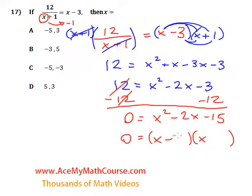We're looking for two numbers that multiply to negative 15 and add up to negative 2. Negative 5 and 3 will work. I'll draw a nicer 3 here. Not really that much better, but that's okay.